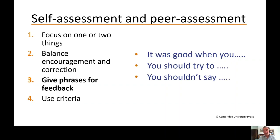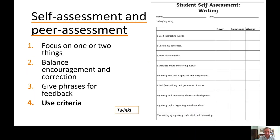Third, give students phrases for feedback — for example, 'it was good when you...', 'you should try to...' — just to help them develop the habit of giving feedback. And fourth, if you can give criteria — which you might find in Cambridge exam handbooks — grids like those from sites such as Twinkle are really helpful. You can give these to students to help them think about self-assessing their writing and what's really important.